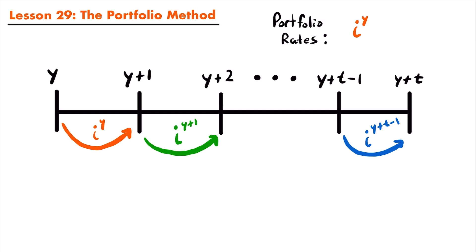If an individual or corporation deposited an amount X at year Y into an investment fund using the portfolio method, we want to calculate the future value of that investment from year Y to year Y plus T. For compound interest, the accumulation factor is (1 + i)^N. In this case, every single portfolio rate is only active for one year, so all accumulation factors have a power of one. Using this, we can accumulate the interest on this investment from year Y to year Y plus T.